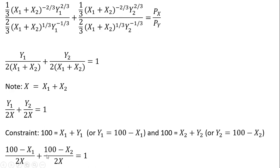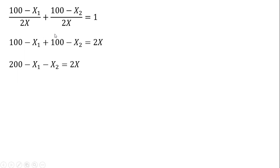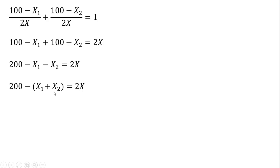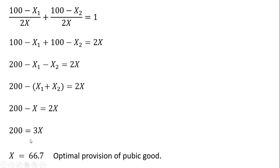Now we simplify. Multiplying everything through by 2x, we get 2x on the right-hand side and simplify the left-hand side. Simplifying further and substituting x subscript 1 plus x subscript 2 as the total public good x, we solve for x. The optimal provision of the public good is 66.7 units.